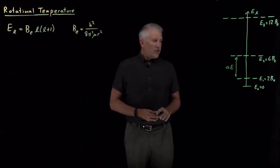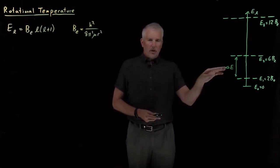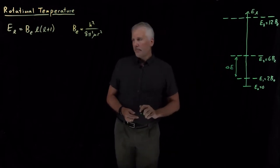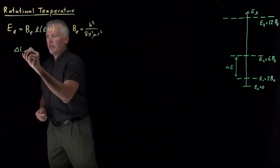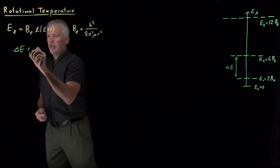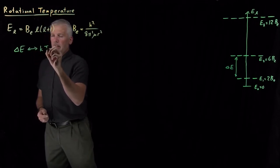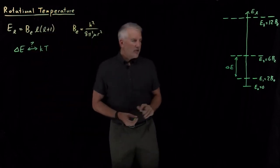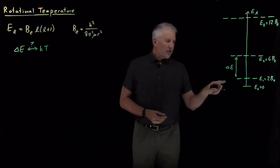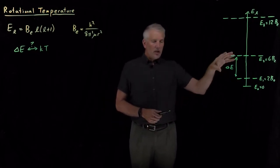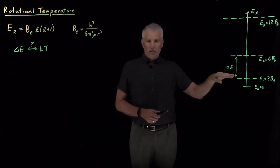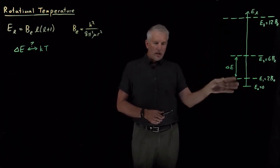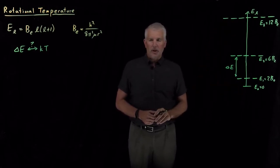An interesting question is whether these energy levels are large or small compared to kT. We would like to know how ΔE between these energy levels compares to kT, because it tells us whether many energy levels are likely to be populated, or whether only the lowest few are populated.